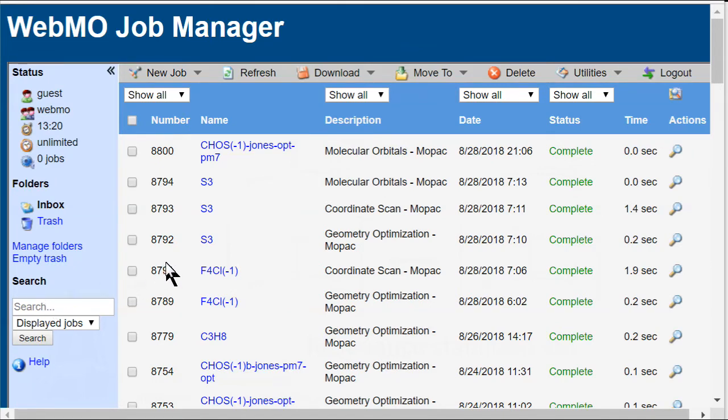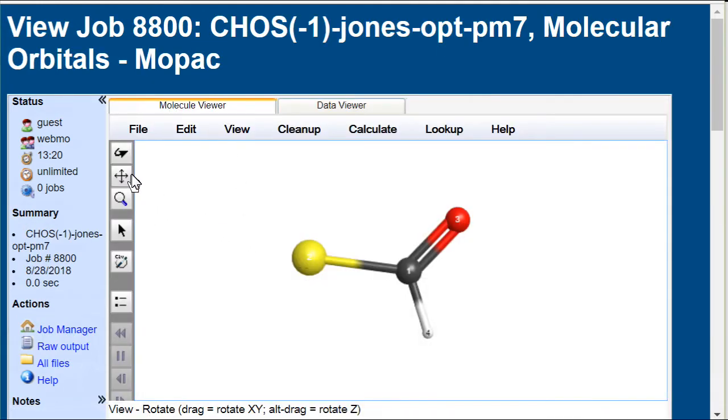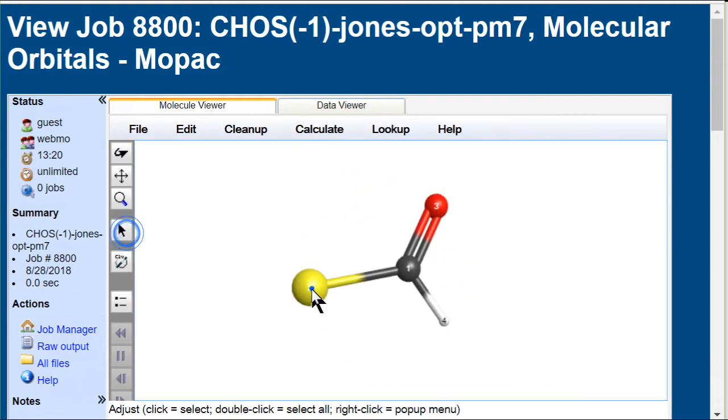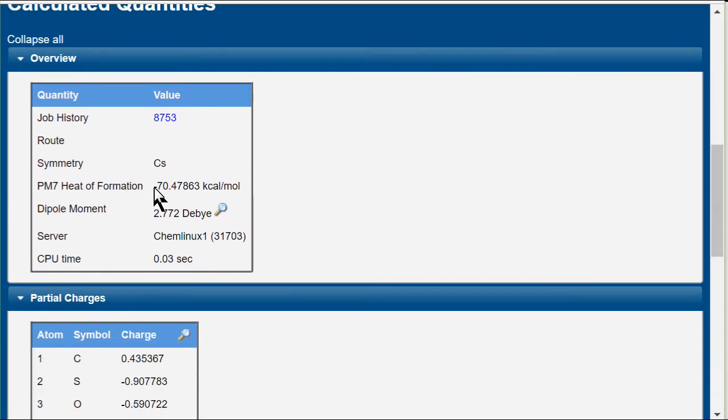We already optimized one form, so let's check it out briefly. Trigonal planar, sulfur-carbon-oxygen bond angle of 127.121 degrees, heat of formation minus 70.48 kcal per mole.